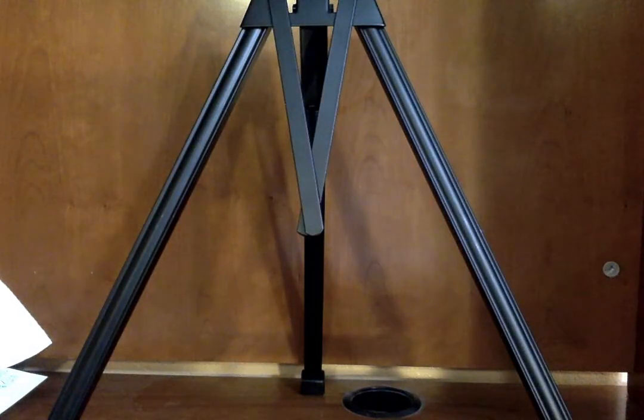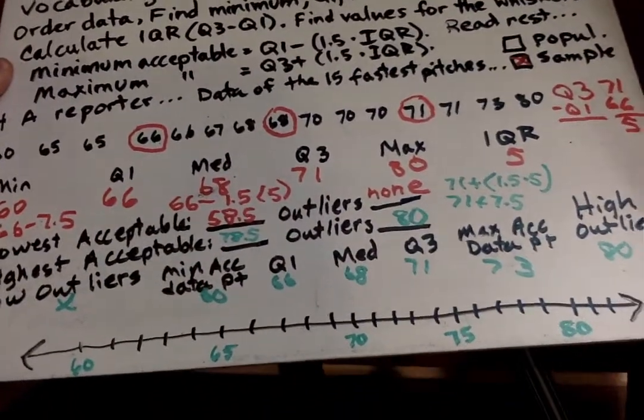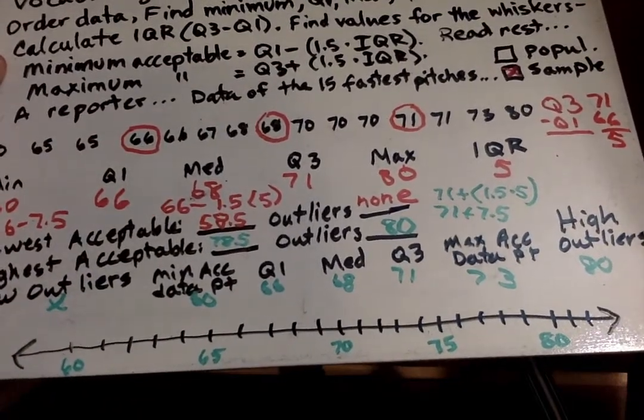So this is what I did there, where I went ahead and I went by fives. But you should be able to tell where everything is. So our minimum, we're going to go with quartile 1 is at 66. So that's the front of the box.